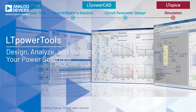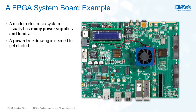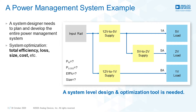Modern electronic systems include many power supplies and loads. In fact, it's not uncommon to see board designs with tens and even hundreds of supplies that could be architected in many different ways. The answer is to start by drawing a power tree diagram, which is a nice way to visualize the architecture of a power system, shown here with the main input supply on the left, the individual power elements in the middle, and the loads on the right.